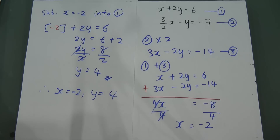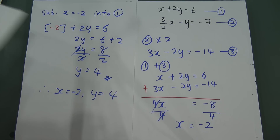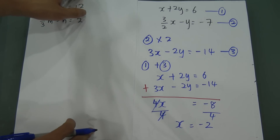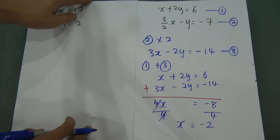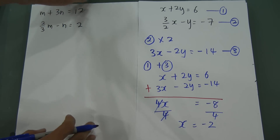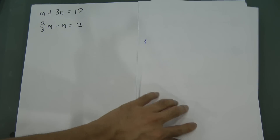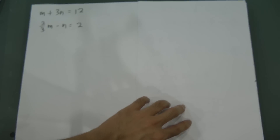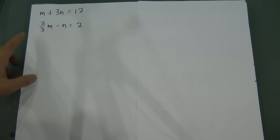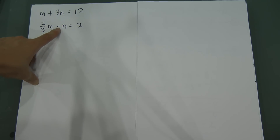Looking at this question, they didn't use x and y — they use m and n, which is totally the same thing. The equation is 2 over 3 m minus n, and 2 over 3 is a fraction.